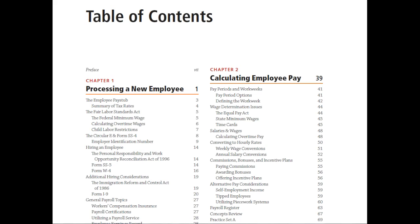We begin in chapter one with the processing of a new employee — looking at all the steps necessary for a business to begin hiring employees. There are a number of forms that need to be completed, and we focus on those in this chapter. You don't really see a comparable chapter in most competitors' offerings. Because this chapter focuses heavily on the beginning of the process, it is very form-heavy. Chapter two focuses on calculating employee pay — including commissions, bonuses, and incentive plans.